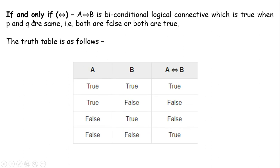The last connective is if-and-only-if, which is a biconditional. A if-and-only-if B is true when both A and B have the same truth value — that is, either both are false or both are true. If they have different truth values, the result is false.